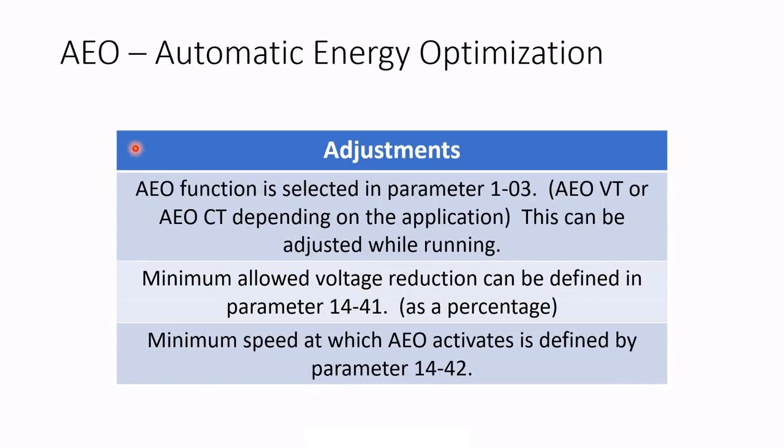Parameter adjustments: the AEO function is selected in parameter 103. There are two choices — AEO variable torque or AEO constant torque. Choose the right one for your application. This can be turned on and off while the drive is running.